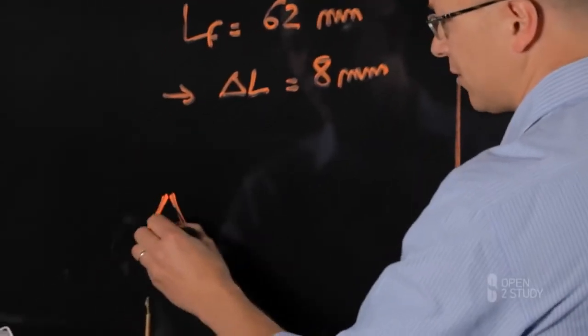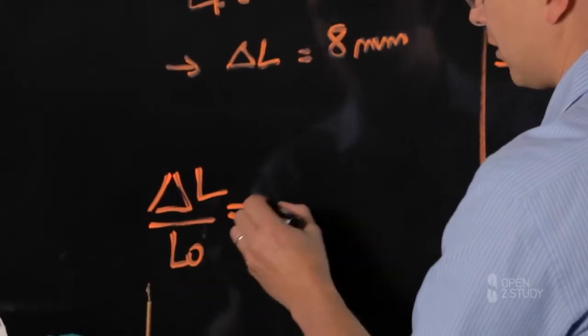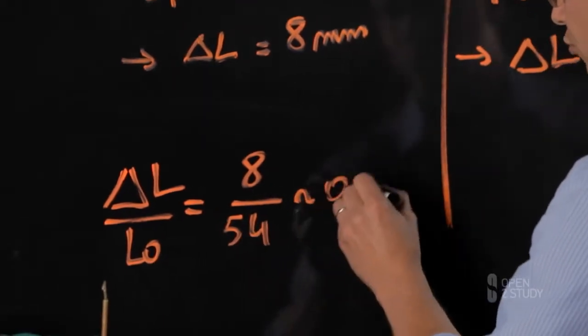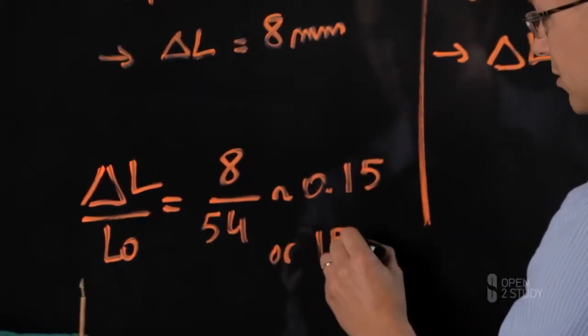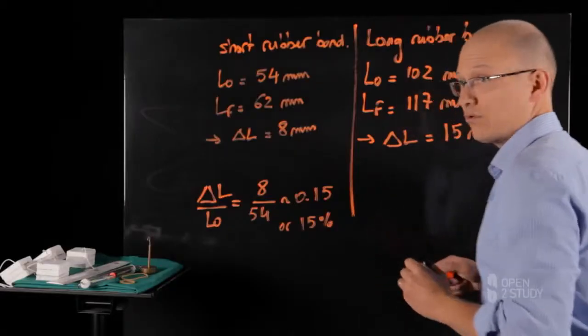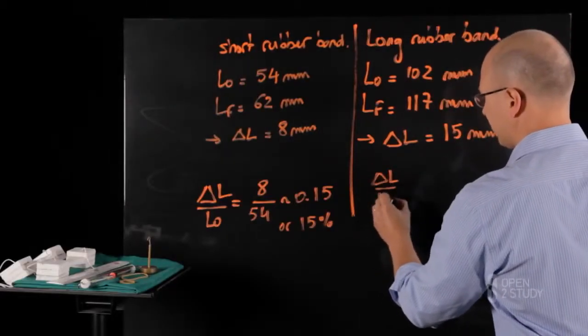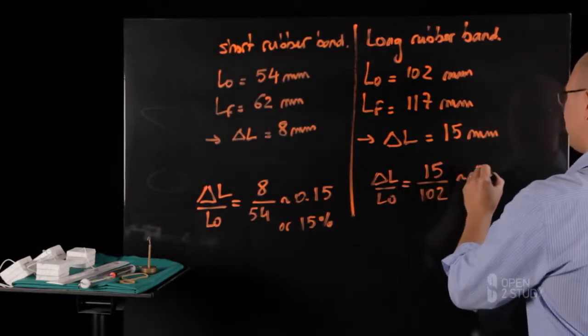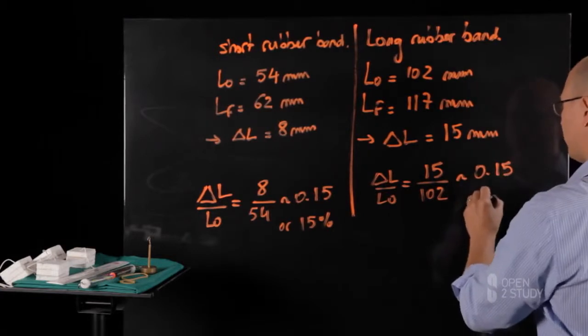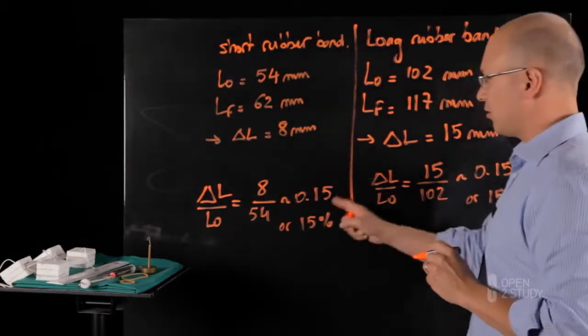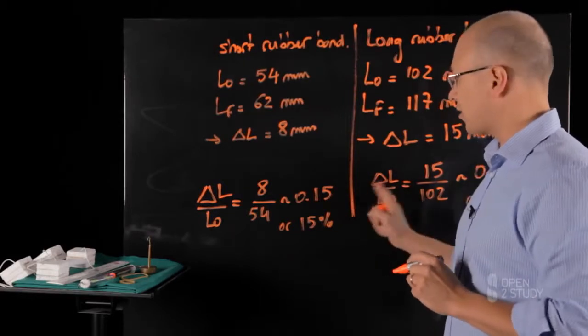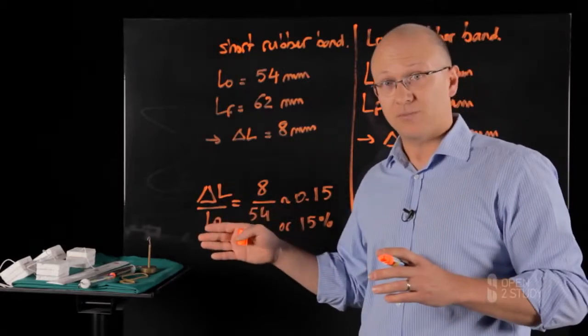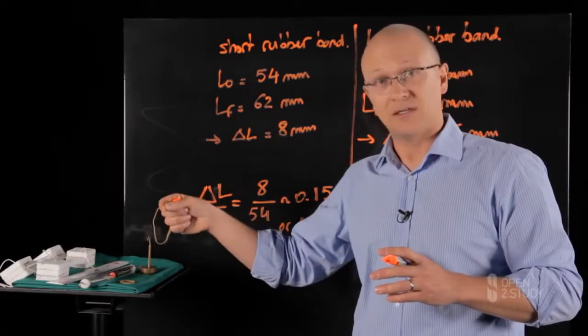If we divide the change in length by the initial length, for the short rubber band we get 8 mm over 54, and that's about 0.15 or 15%. For the long rubber band, we have delta L over L0 equal 15 over 102, and that's about 0.15 or 15%. We now see that the numbers do match. We have characterized the material's behavior, its capacity to stretch under a load, regardless of the geometry of the specimen we've tested, in this case, the initial length.